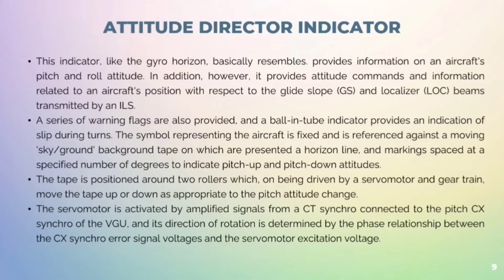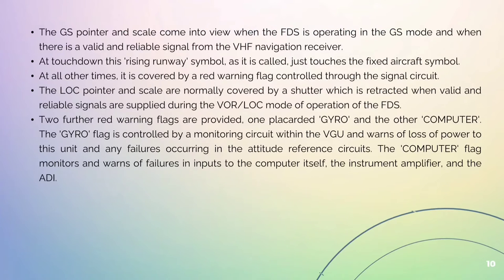The tape is positioned around two rollers, being driven by a servo-motor and gear train, which move the tape up and down as appropriate to the pitch attitude change. The servo-motor is activated by amplified signals from a CT synchro connected to the pitch CX synchro of the VGU, and its direction of rotation is determined by the phase relationship between the CX synchro error signal voltage and the servo-motor excitation voltage. The GS pointer and scale come into view when the FDS is operating in the GS mode and when there is a valid and reliable signal from the VHF navigation receiver. At touchdown, this rising runway symbol just touches the fixed aircraft symbol.